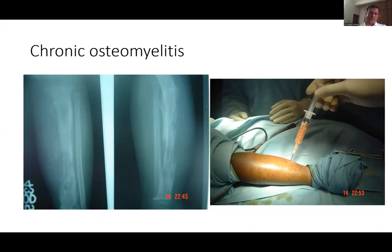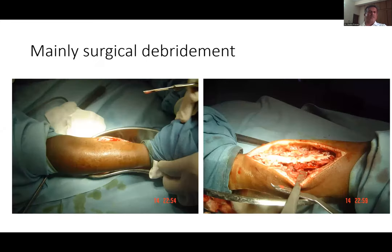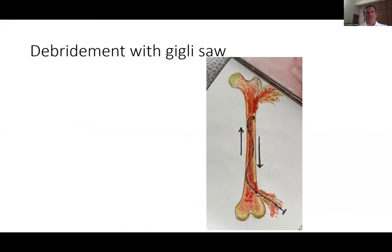We have been discussing gigli saw decompression today. When I shared it with Maulin I started doing it as well — it's quite a good method. The message is: one should do thorough debridement. For chronic osteomyelitis with chronicity, it is an extensive approach with thorough debridement. This diagram shows the windows which are made — if a long bone is involved, based on MRI and clinical findings, we can make windows and do a thorough debridement.